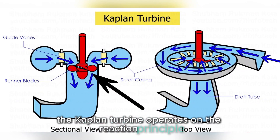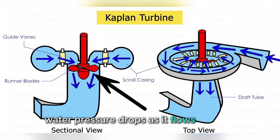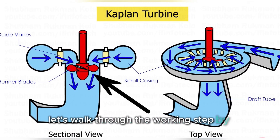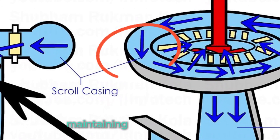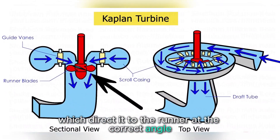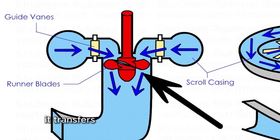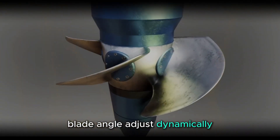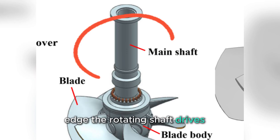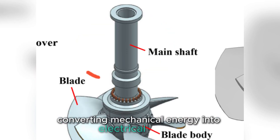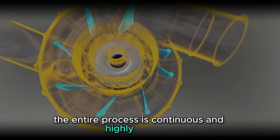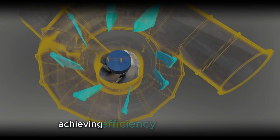The Kaplan Turbine operates on the reaction principle, meaning water pressure drops as it flows through the turbine. Energy is extracted from both the velocity and pressure of water. Let's walk through the working step-by-step. Water enters through the scroll casing, maintaining high flow velocity. It passes through stay vanes and guide vanes, which direct it to the runner at the correct angle. As the water hits the runner blades, it transfers its energy, causing the runner to spin. Blade angle adjusts dynamically depending on flow conditions — this is what gives Kaplan Turbines their efficiency edge. The rotating shaft drives a generator, converting mechanical energy into electrical energy. Finally, the water exits through the draft tube into the tailrace. The entire process is continuous and highly efficient.